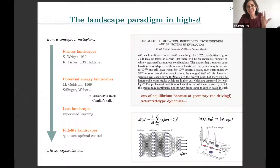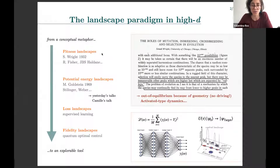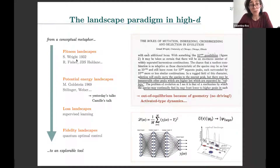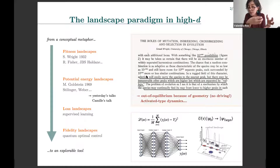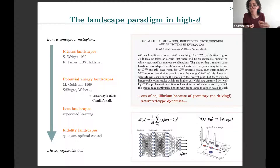This idea of interpreting dynamics as optimization of a function is not new — it has quite a long history, particularly in biology or soft matter. What I'm reporting here is taken from a paper of 1932 by Wright, who was a geneticist discussing evolution broadly. He suggests interpreting evolutionary dynamics as a walk of points — representing your species or individuals — along the surface of what we would call nowadays a fitness function, which is a function of the genotype that measures the ability of an individual to reproduce in a given fixed environment.